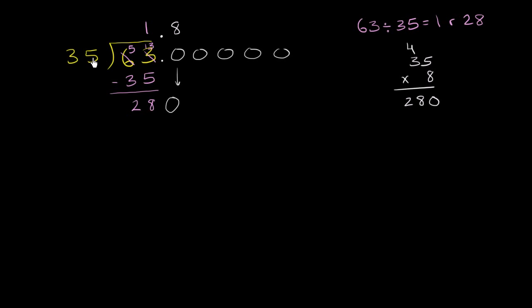8 times 5, we already figured it out. 8 times 35 is exactly 280. And we don't have any remainder now. So we don't have to bring down any more of these zeros. So now we know exactly that 63 divided by 35 is equal to exactly 1.8.